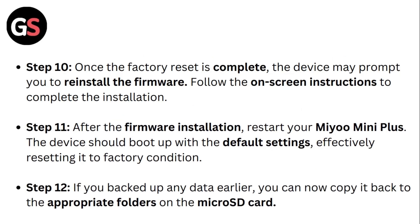Once the factory reset is complete, the device may prompt you to reinstall the firmware. Follow the on-screen instructions to complete the installation. Step 11: After the firmware installation, restart your Mio Mini Plus. The device should boot up with the default settings, effectively resetting it to factory condition.